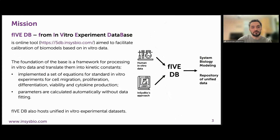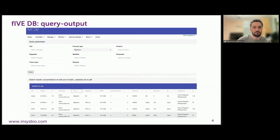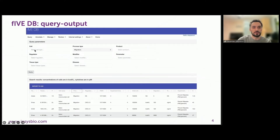Besides parameters, 5DB hosts in vitro experimental data sets manually extracted from literature in the experimental context. 5DB is designed to be searched for kinetic data based on cell type, cell process, and factors for various combinations.